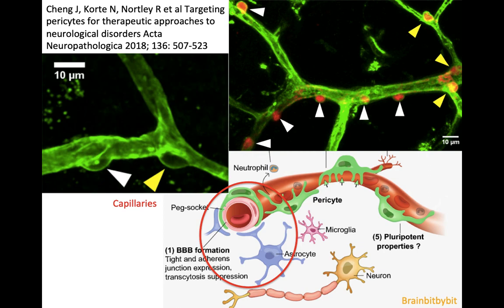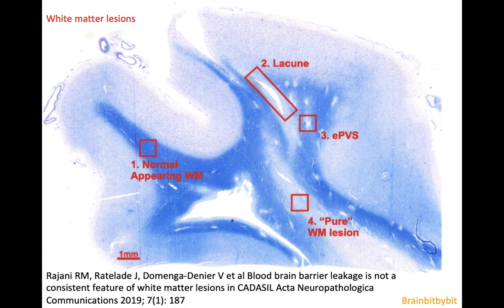This explains the white matter abnormalities in CADASIL. The anterior temporal lobe involvement is especially interesting because pericytes have recently also been linked to epilepsy — so that's something to keep an eye on. I use it as a mnemonic that there is something special with the pericytes in the anterior temporal lobe, which explains the predilection for the anterior temporal lobes in CADASIL and also plays a role in the pathogenesis of epilepsy.